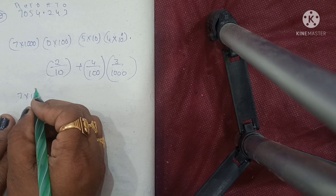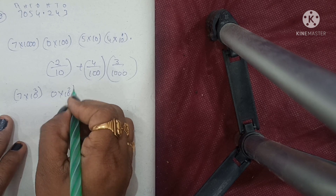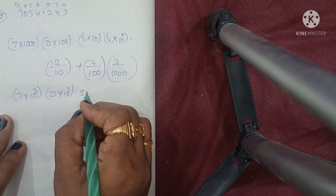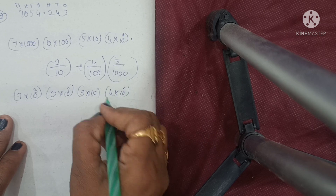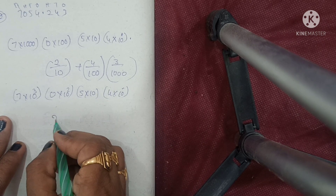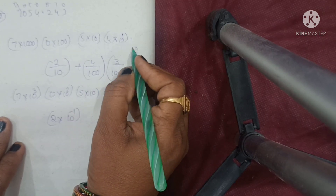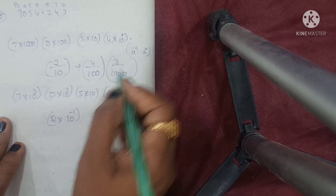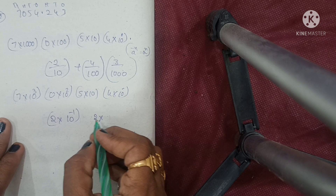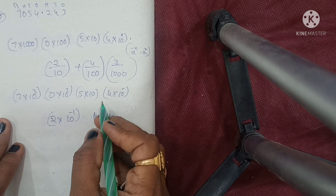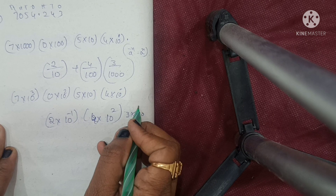Converting to exponent form: 7 into 10 to the power of 3 (=1000), plus 0 into 10 power of square (=100), plus 5 into 10, plus 4 into 10 power of 0. After decimal: 2 into 10 to the power of minus 1, plus 4 into 10 to the power of minus 2, plus 3 into 10 to the power of minus 3.